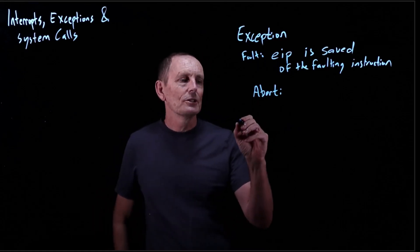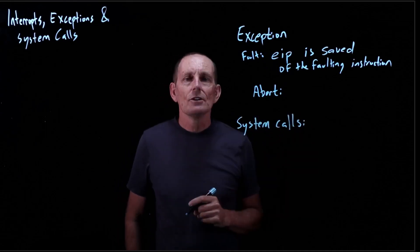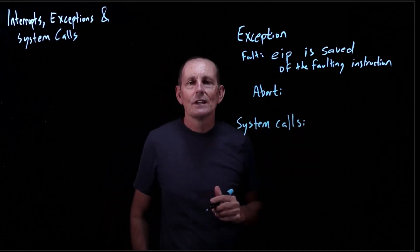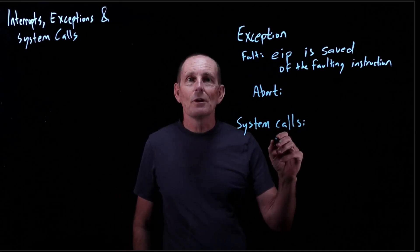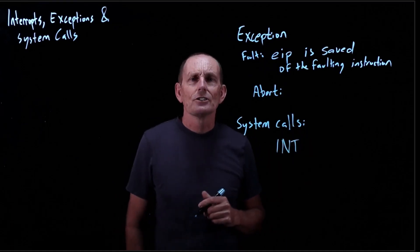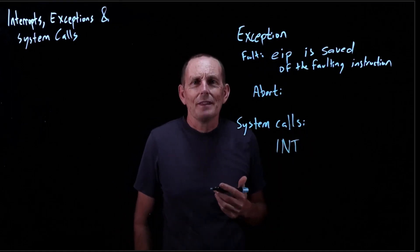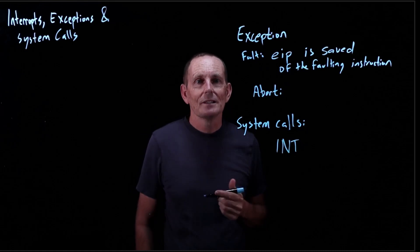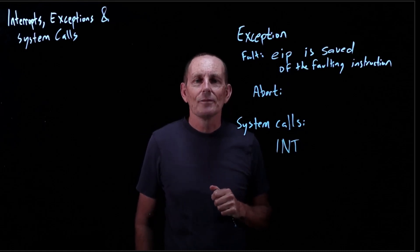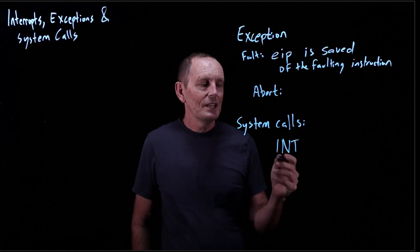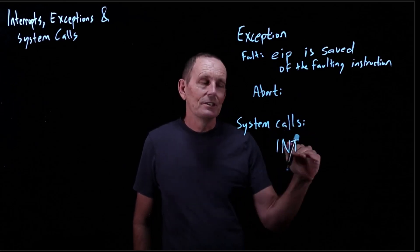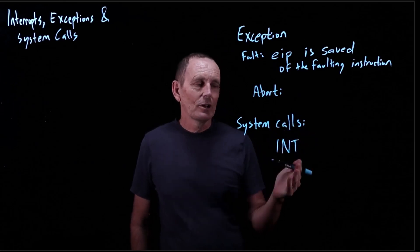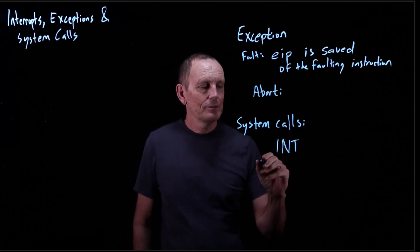We also have system calls. In the case of an x86, this is the interrupt instruction — really it should be called a trap instruction, but they called it an interrupt instruction. Here, the saved EIP is after this instruction, so basically we're going to return execution after it.